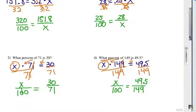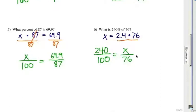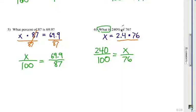For the last two problems: number 5, 'what percent' — that would be x over 100. 'Of 87' and 'is 69.9', so the other ratio looks like 69.9 over 87 — 'is' over 'of'. Number 6: 240% is 240 over 100. 'What is' means the 'is' number is unknown — that's the x. And 'of 76', so 76 goes on the bottom.